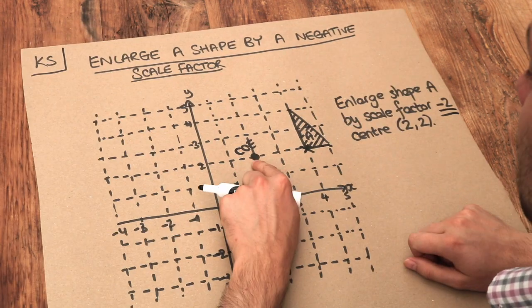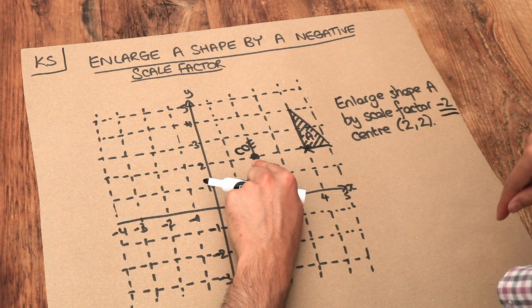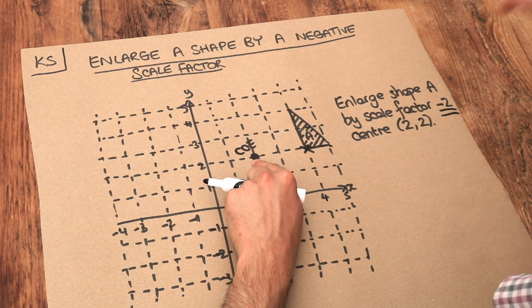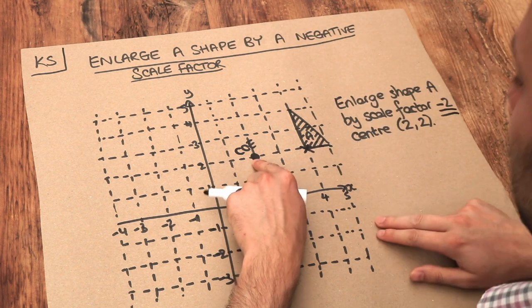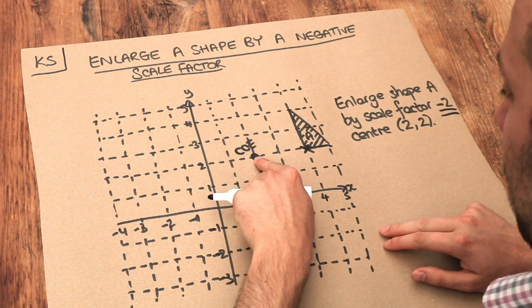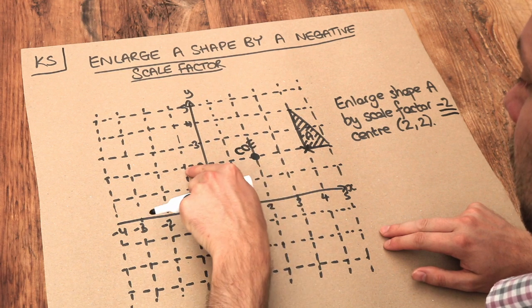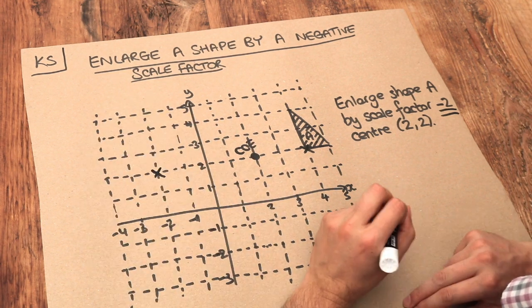So the 2 right becomes minus 4 right. Now negative 4 right is the same as 4 left because you're going to go in the opposite direction. So we're going to go from the centre of enlargement, always starting here, 1, 2, 3, 4 left and we end up here.